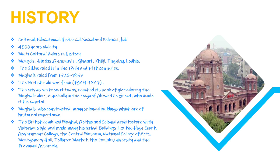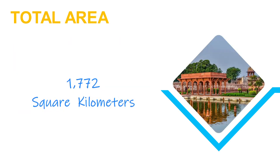The city as we know it today reached its peak of glory during the Mughal rulers, especially in the reign of Akbar the Great, who made Lahore the capital of his empire. The Mughals also constructed many splendid buildings which are famous worldwide. As Lahore is the second largest city of Pakistan, its total area is 1,772 square kilometers.